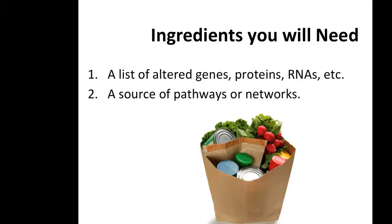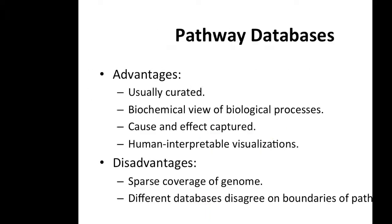In any pathway or network analysis, you need two basic ingredients. First, a list of altered genes, proteins, and RNAs from experiments you've performed — upregulated RNAs, mutated proteins, changes in ubiquitination in a tumor cell line. Second, you need a database or source of pathways or networks to apply this information to, in order to interpret the list in the context of the pathway or network.